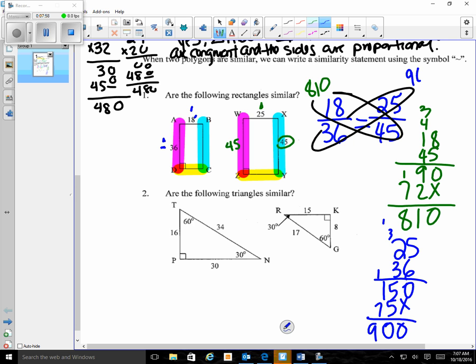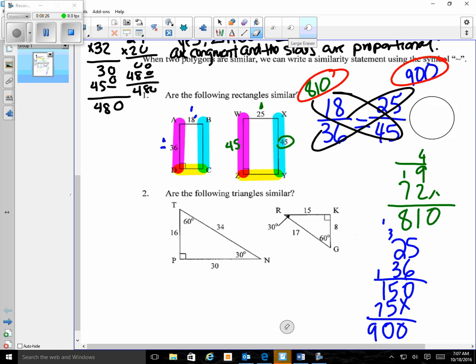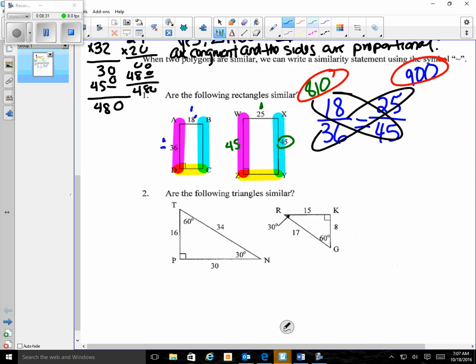So those are not similar figures, even though we know that they do have all the angles, corresponding angles are equal because they're all 90 degrees, but the sides are not proportional. So because these two numbers did not come out the same, so the way we would write that, I'm going to erase this guys, my work so I can write my conclusion. No, rectangles ABCD and WXYZ are not similar.